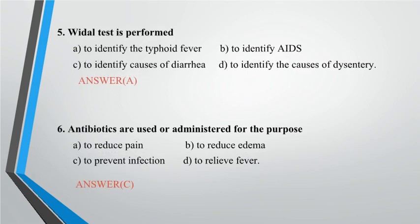Question 5: Vital test is performed? A. To identify the typhoid fever, B. To identify AIDS, C. To identify causes of diarrhea, D. To identify the causes of dysentery. Answer: A.